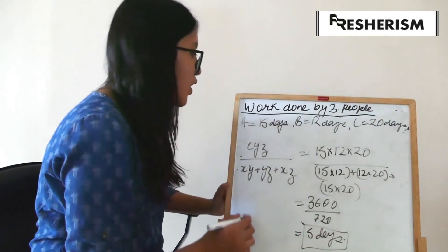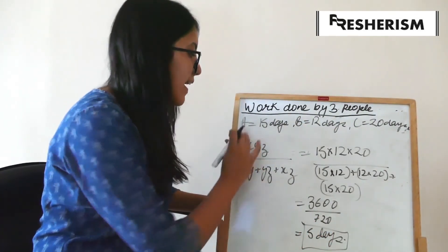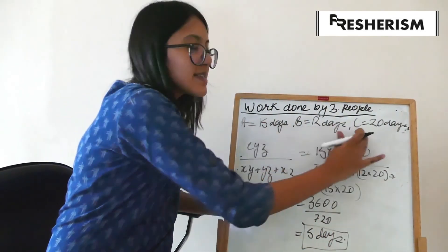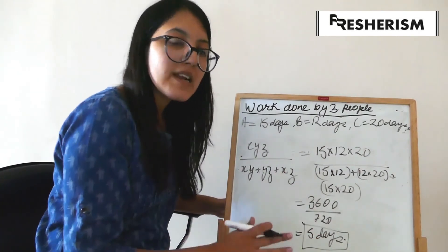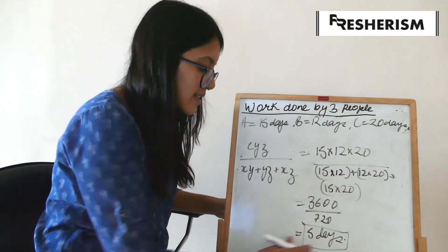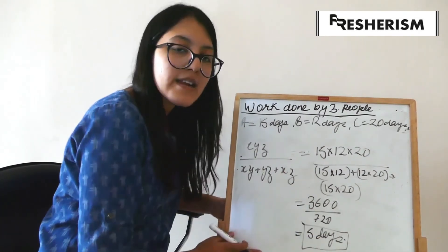Therefore, when A, B, and C work together to complete a certain task, they complete it in 5 days.